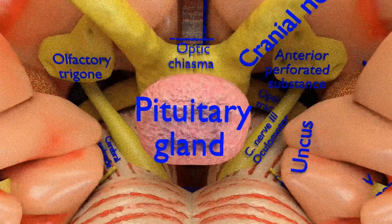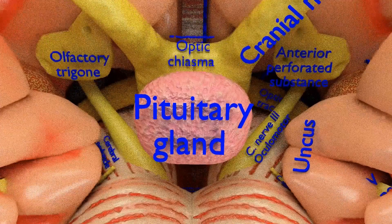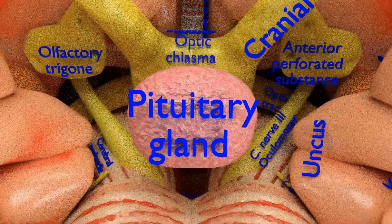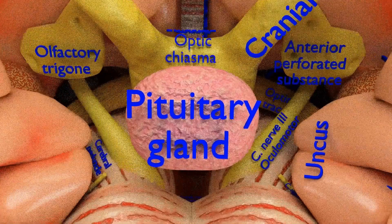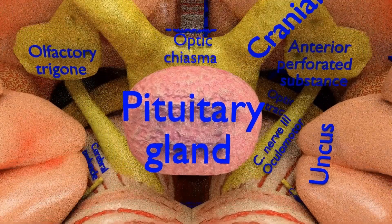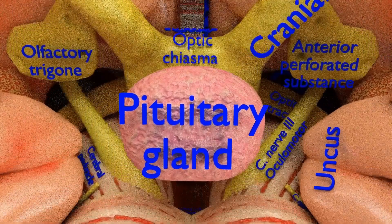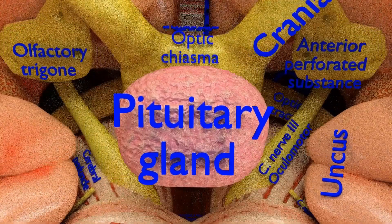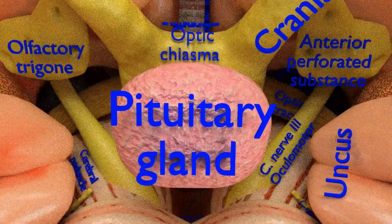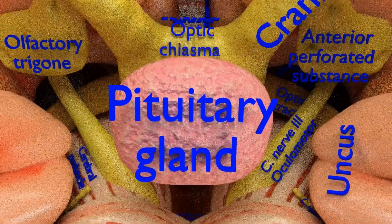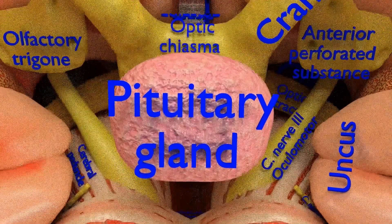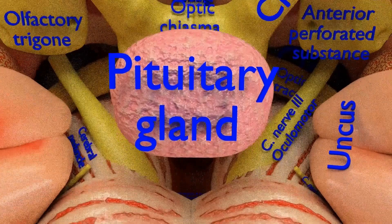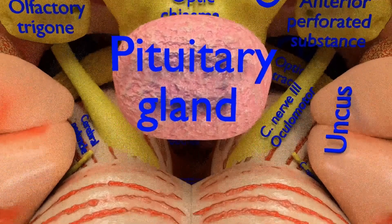The pituitary gland, or hypophysis, is an endocrine gland about the size of a pea, weighing 0.5 grams in humans. It is a protrusion of the bottom of the hypothalamus at the base of the brain. Further discussion of the pituitary gland will follow in part 3 of this CNS series.